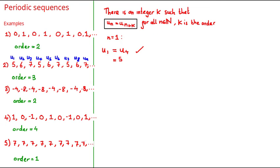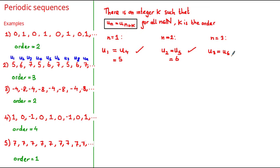Let's have a look at when n is equal to 2. Substituting n equals 2 and k equal to 3, we get that u sub 2 is equal to u sub 5. Looking at the sequence, we see that u sub 2 and u sub 5 are both equal to 6, which also satisfies the definition. Lastly, when n is equal to 3, u sub 3 is equal to u sub 6, and checking our sequence, u sub 3 and u sub 6 are both equal to 7. If you keep substituting more values of n where k is equal to 3, you'll see that the terms you get will always be 5, 6, or 7. This shows that this definition is actually very powerful.